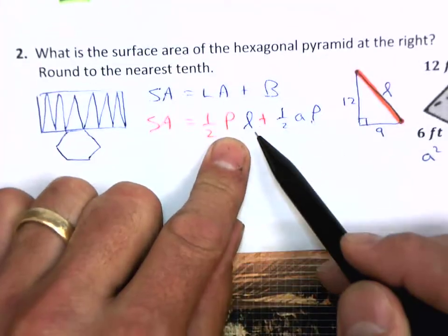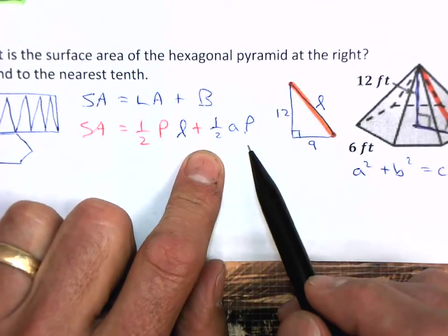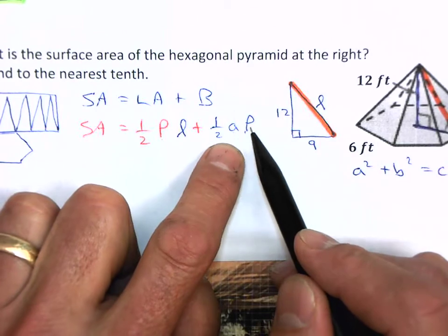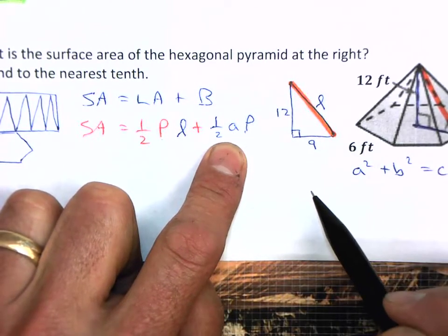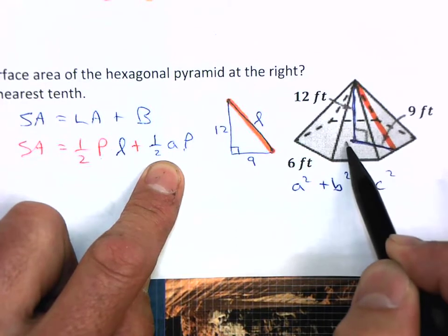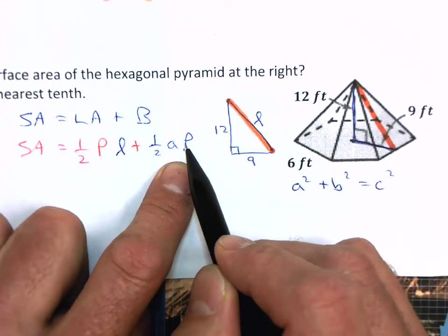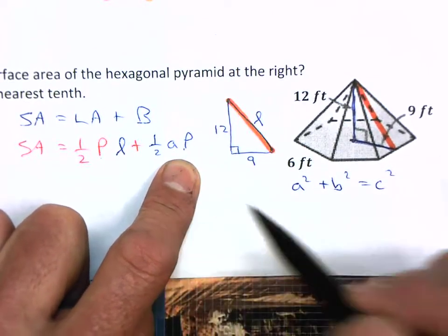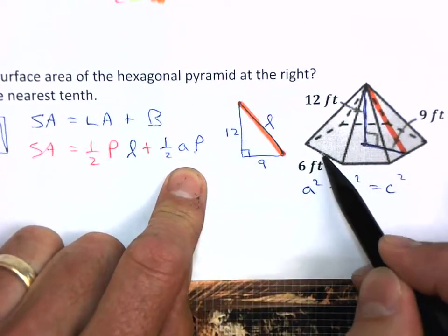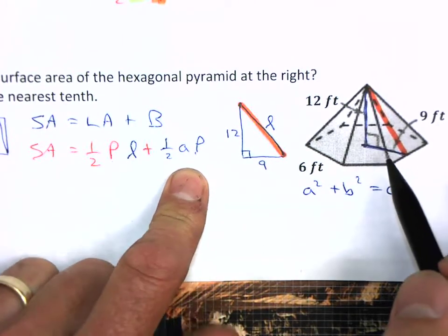Now, remember that the area of a regular hexagon is one-half apothem times perimeter. So this length right here, this is your apothem, this nine feet, just looking at the base here. And then P is your perimeter around your regular hexagon.